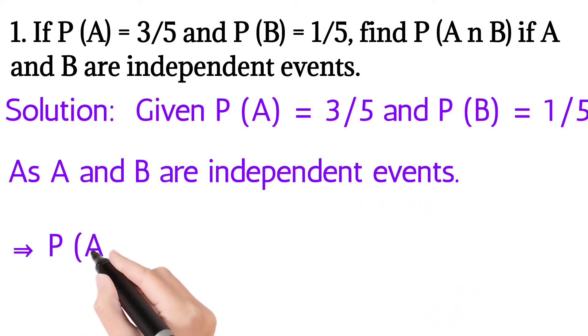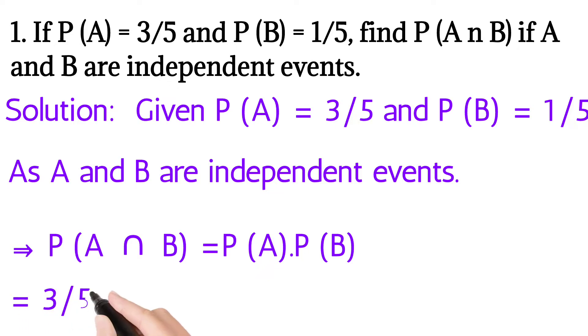We can say that P(A intersection B) is equal to P(A) multiply P(B). So simply substitute the value of P(A) and the value of P(B) and you will get P(A intersection B). Very easy.